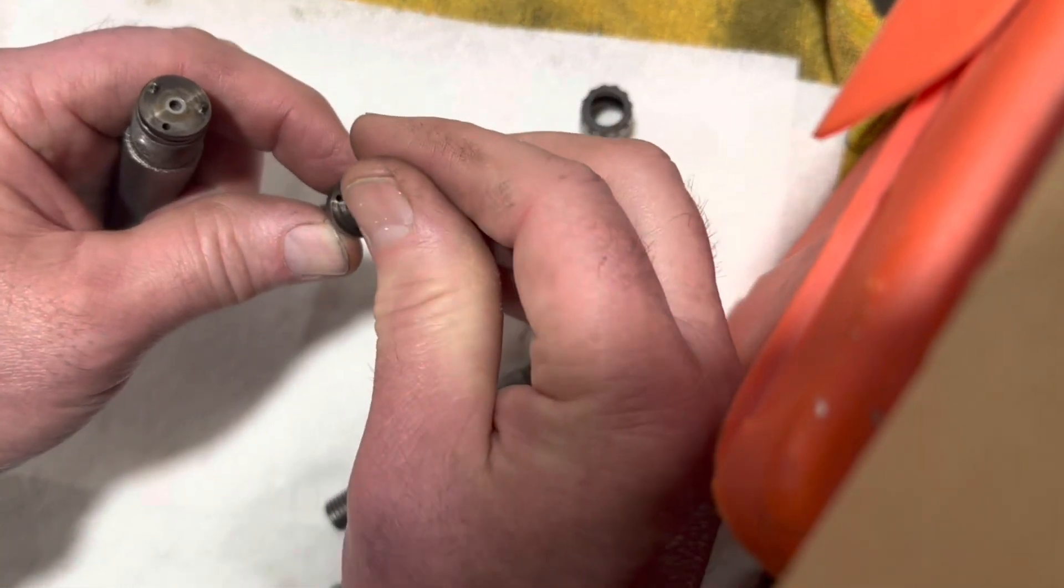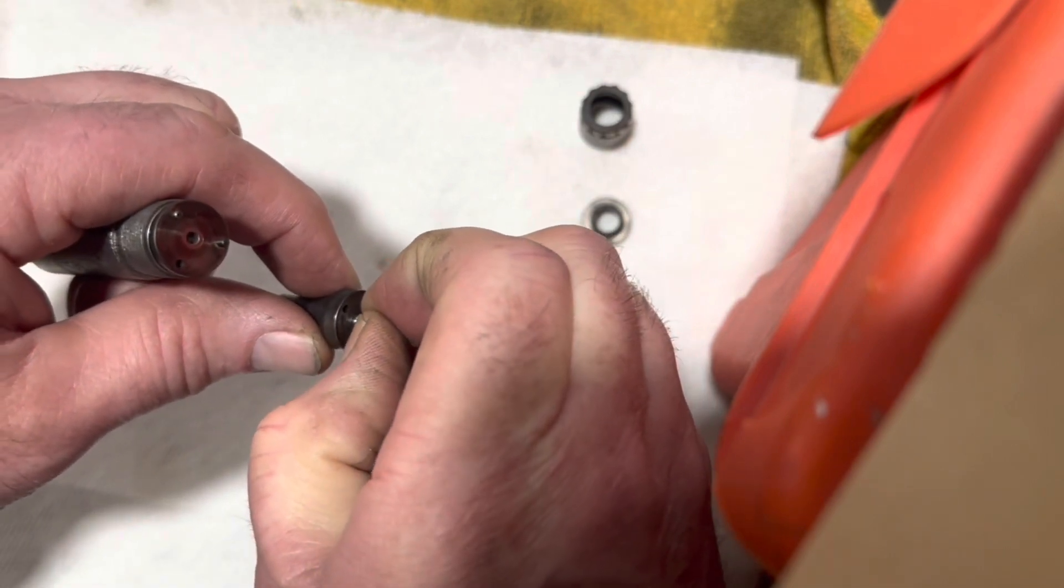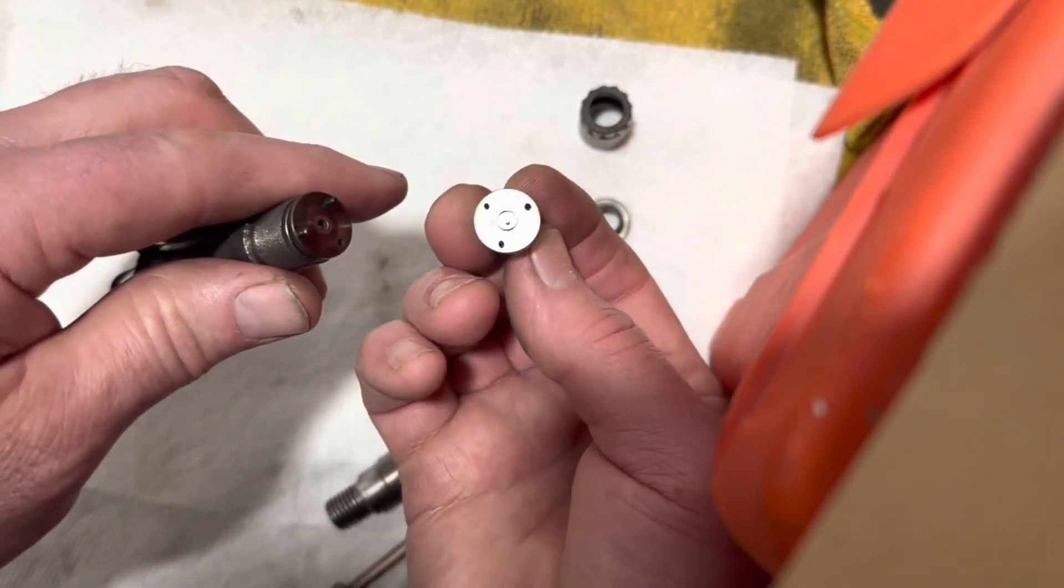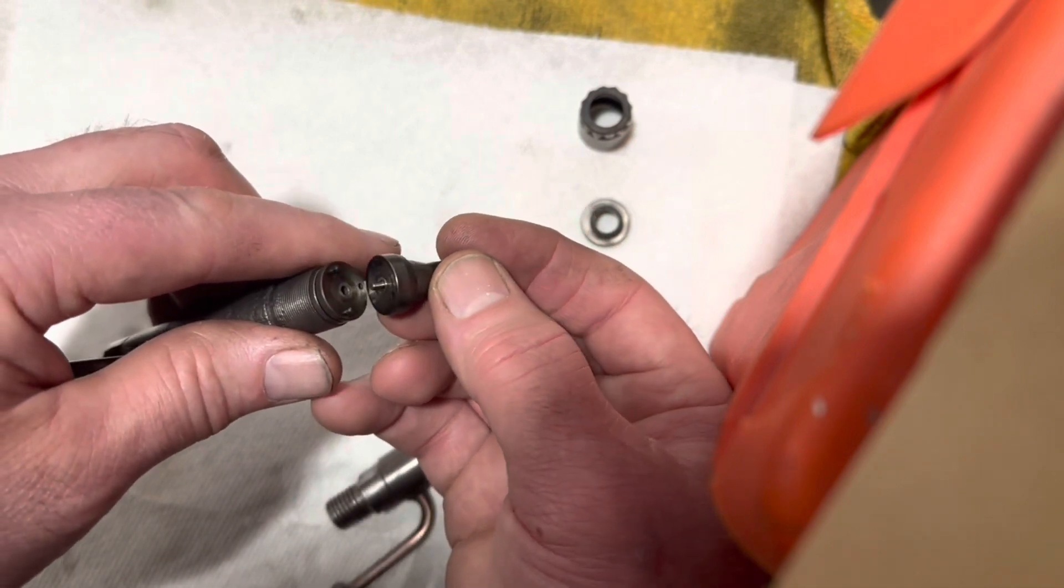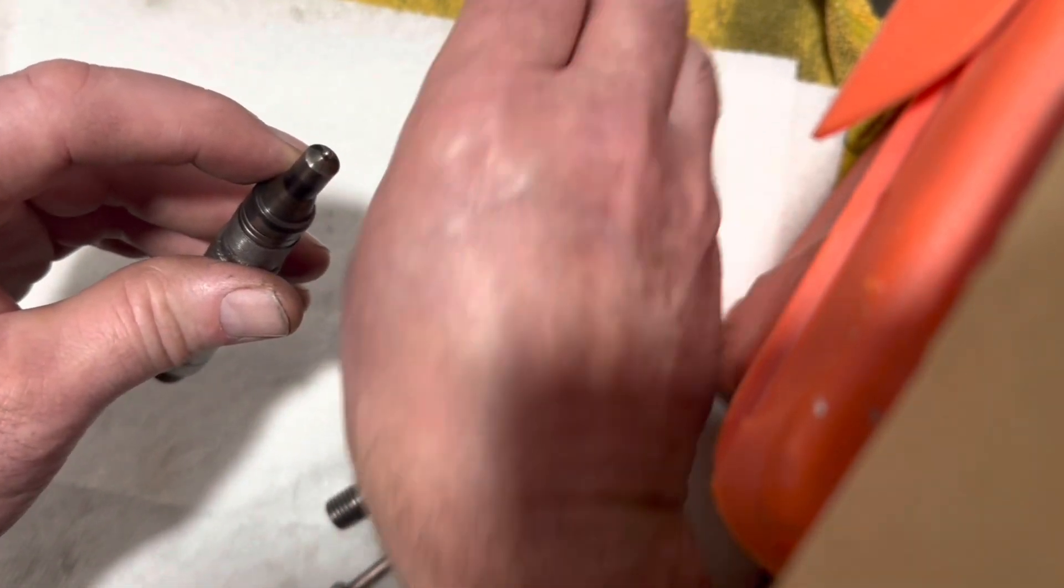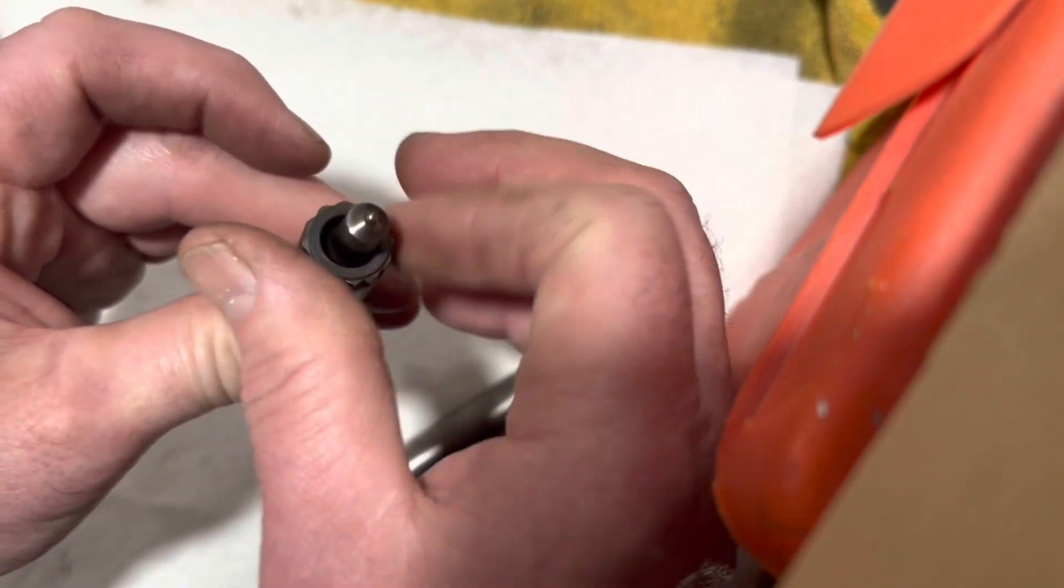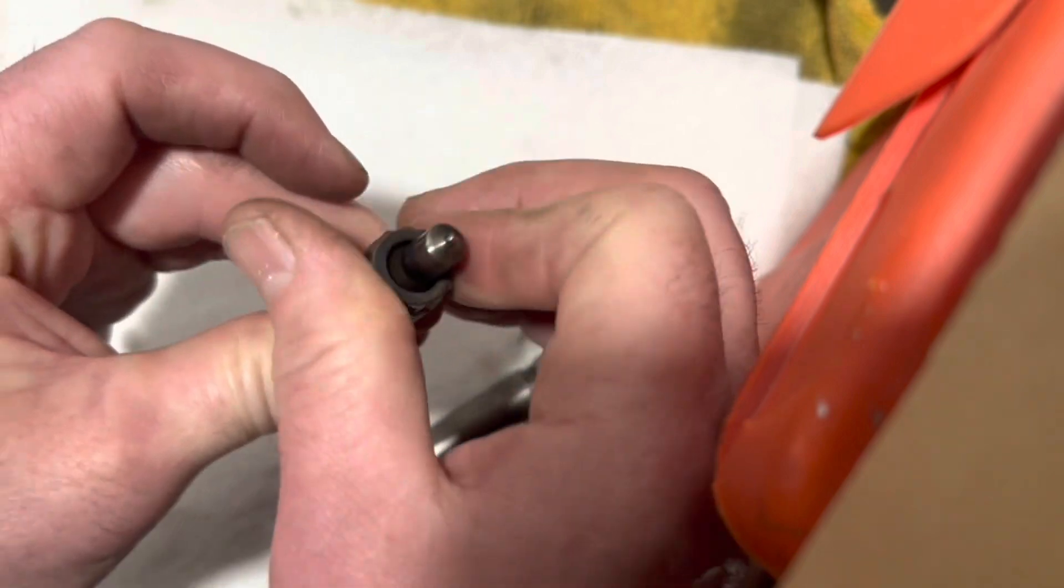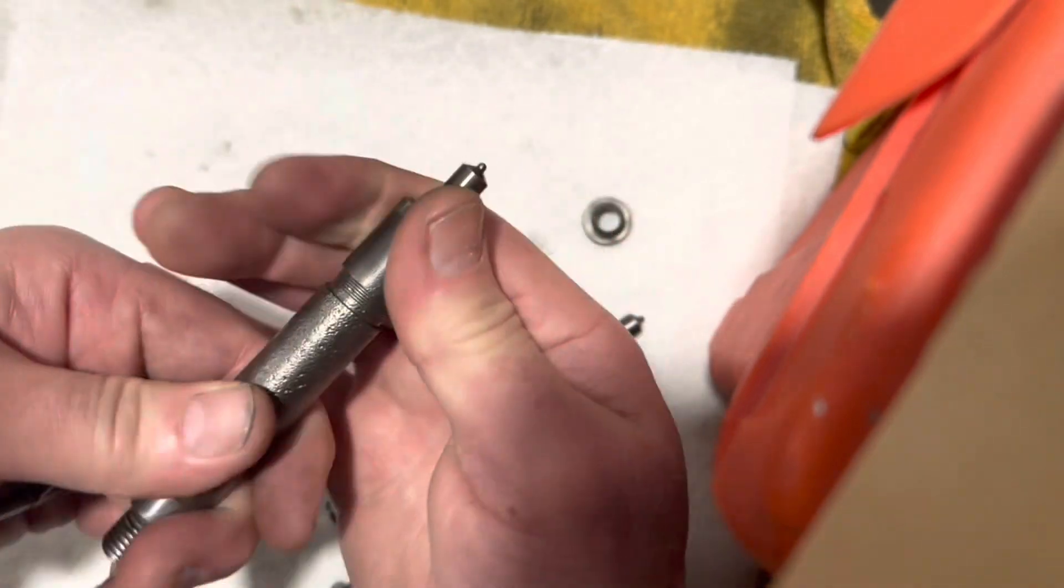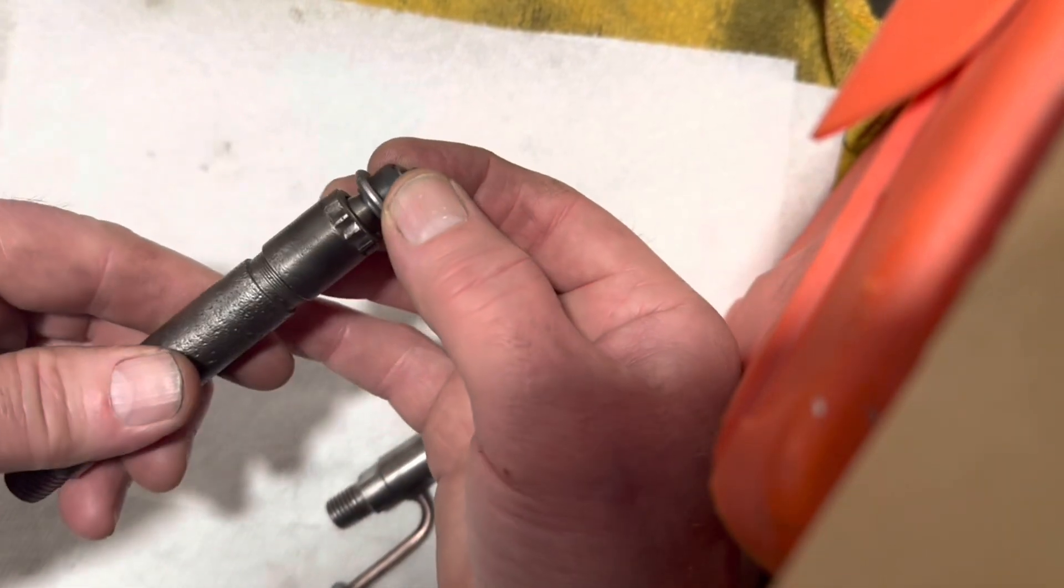This needle should slide in there nice and free. Two big holes again in this one. So let's slide that on and slide that on. Go snug it up in the vise and then this gasket will go back on.